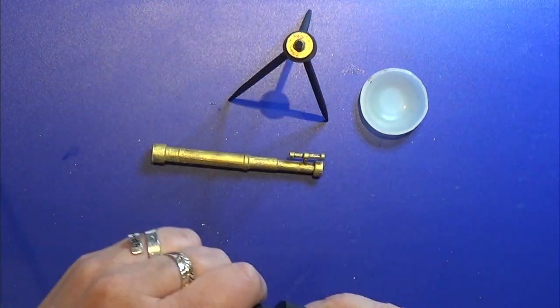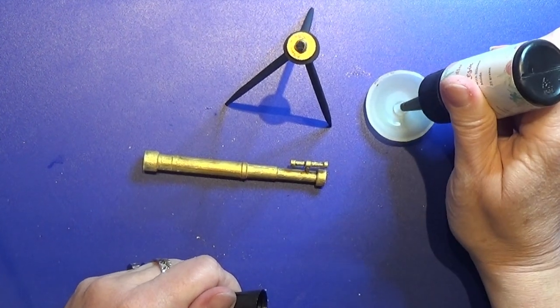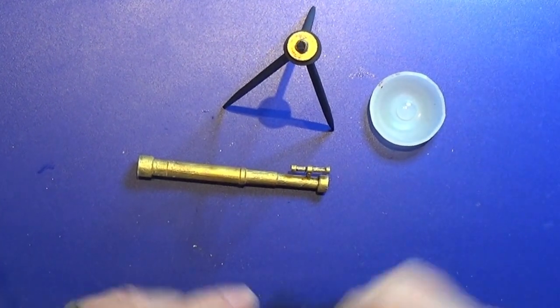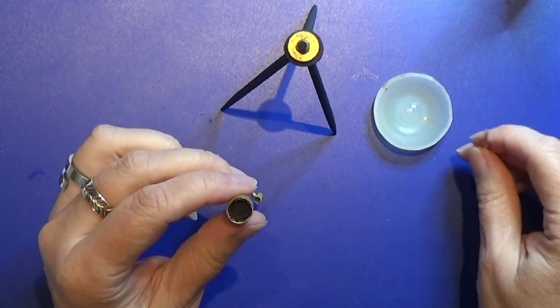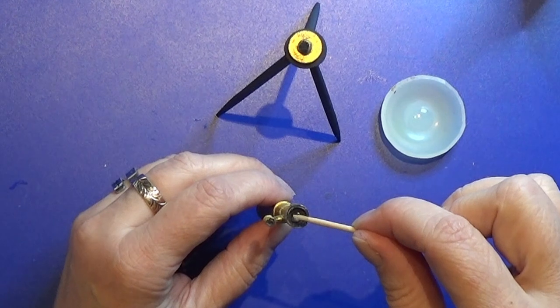When that was all dry, I used my UV resin and I am going to place a tiny drop in all four ends of this telescope so they look like they have the small lens everywhere.